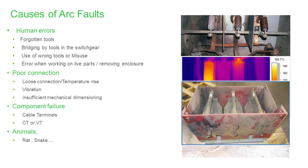What causes the arc? One of the first causes is human error — forgotten tools, bridging by tools in switchgear, using the wrong or misused tools, errors while working with live parts such as moving the enclosure door. In this picture, we can see a wrench left causing a short circuit between phase and ground. Another cause is poor connection, due to loose connections — as seen in the thermal image — vibration, and insufficient mechanical design. Another cause is component failure: cable terminals, CT/VT components can be damaged. And lastly, animals — rats, snakes — anywhere around the system, depending on your geographical location.